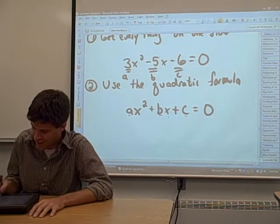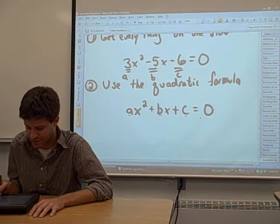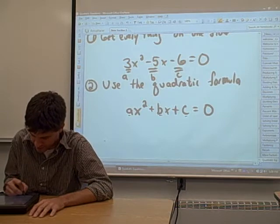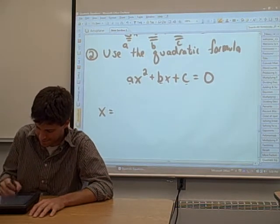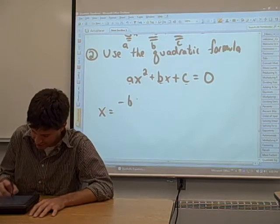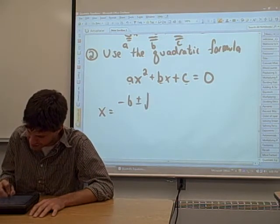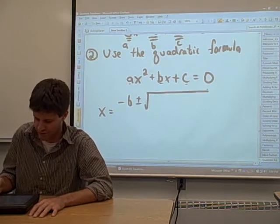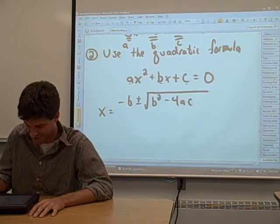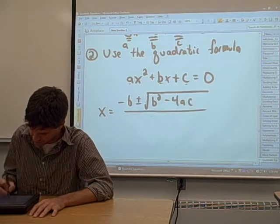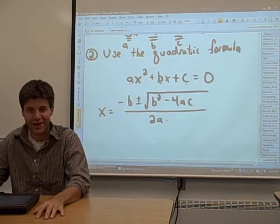Now given any quadratic equation that looks like this, we can solve for x using this formula. And it's a big one. Negative B plus or minus the square root of B squared minus 4AC, the whole thing divided by 2A.